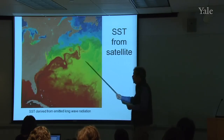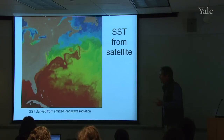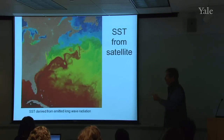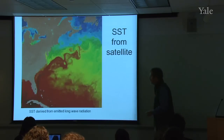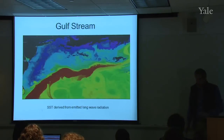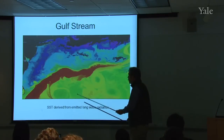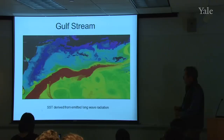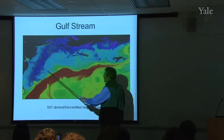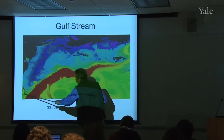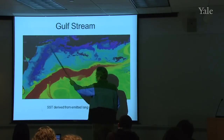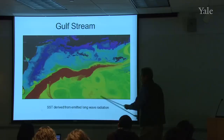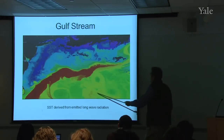Remember this is changing with time — another image taken a week later would look quite different as eddies move and new ones form. Here's a zoom in on another date, again looking at sea surface temperature from emitted long-wave radiation. You can see Delaware Bay, Long Island Sound, and just the tip of Cape Hatteras. Warm water comes up here — possibly a bit of the Labrador Current coming down — and out in the middle is the Sargasso Sea.